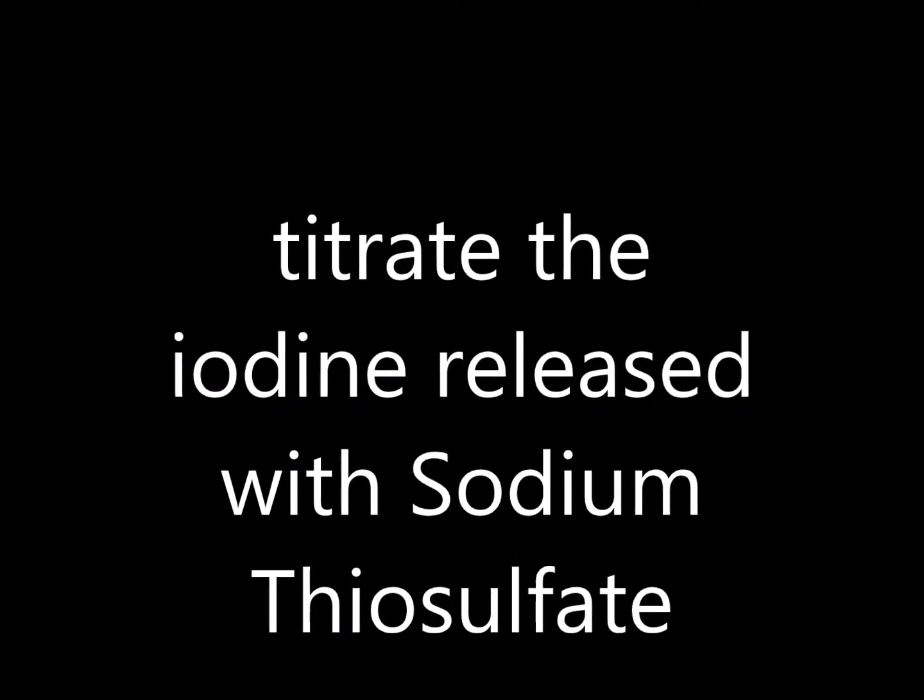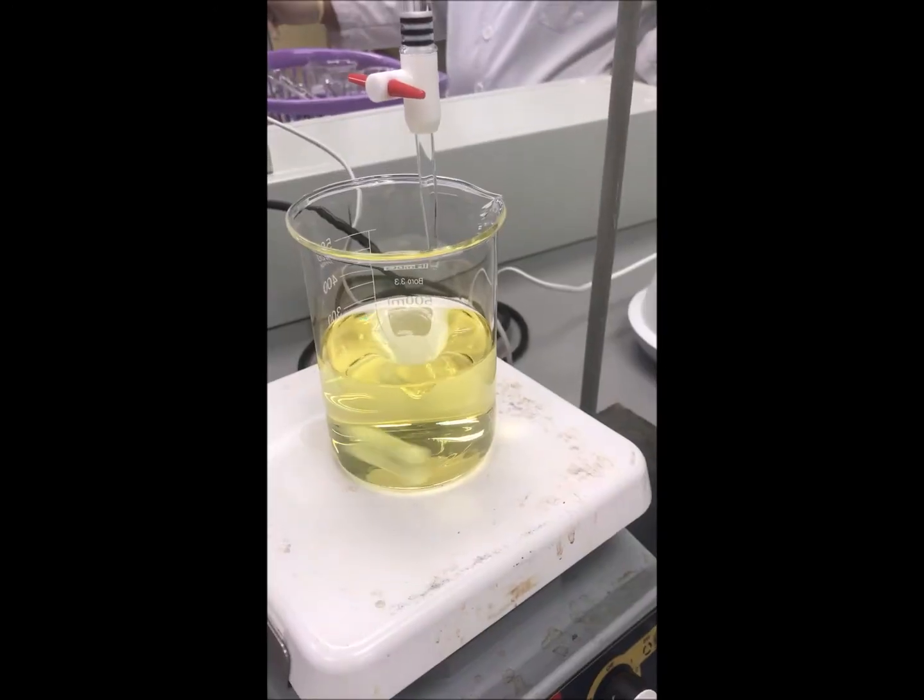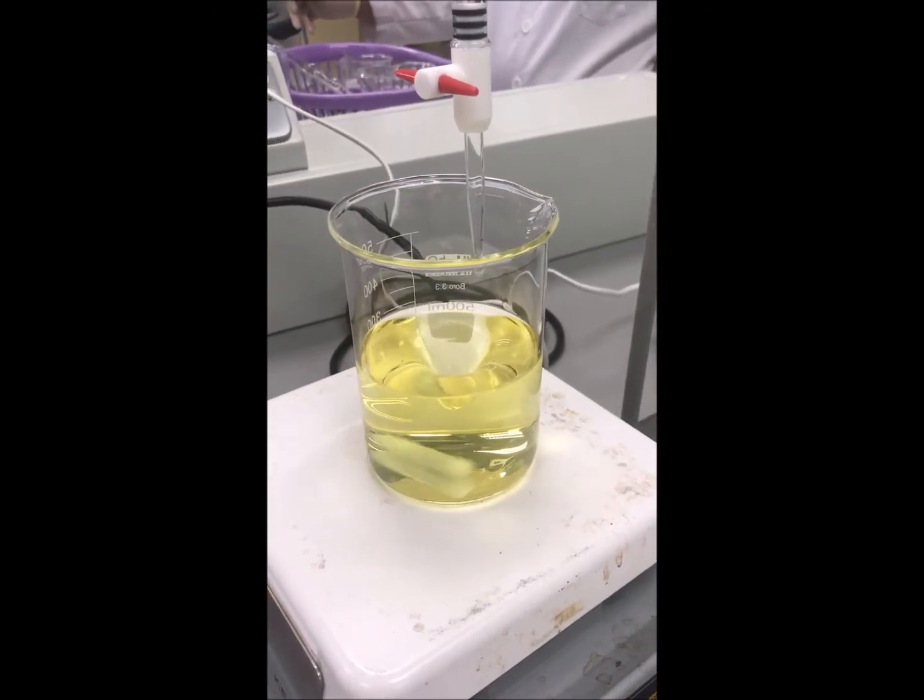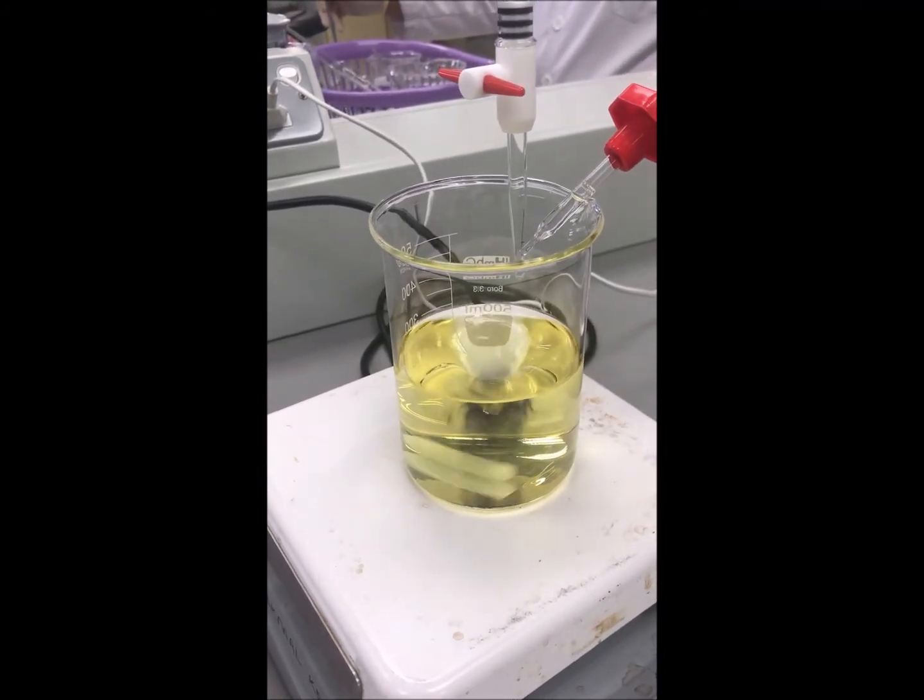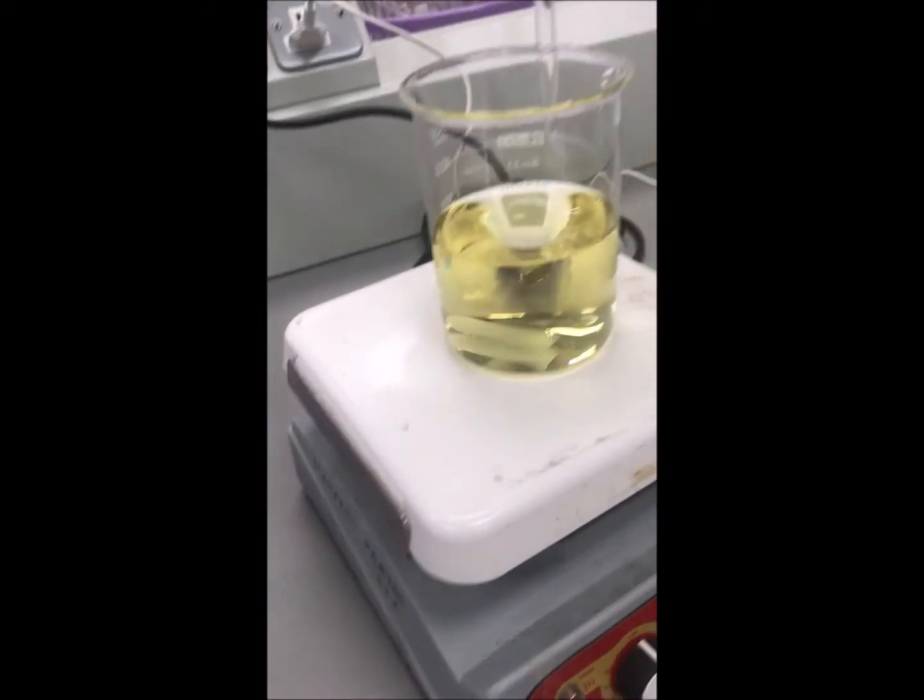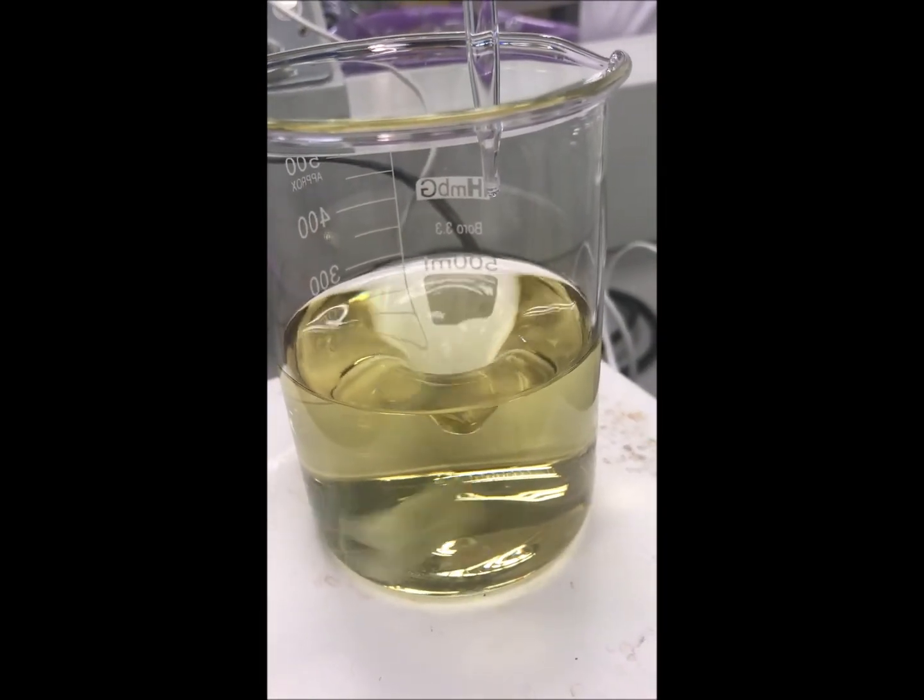Then, immediately titrate the iodine released with the sodium thiosulfate solution. When the color of the mixture becomes yellowish, add in 1 to 2 drops of starch solution and continue the titration until the dark blue color disappears.